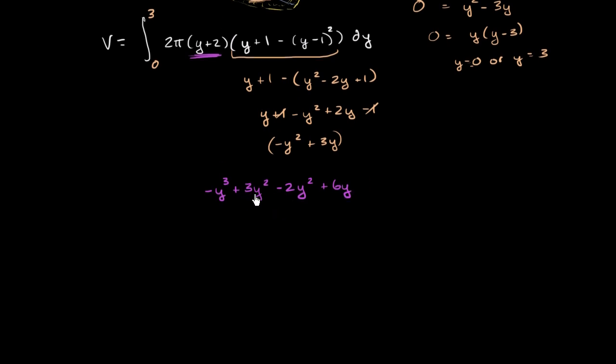So then you go all the way down here. This thing can simplify to, because you have 3y squared minus 2y squared, this is going to be negative y to the third plus this part right over here simplifies to just y squared, plus 6y. So that's this entire part simplified.